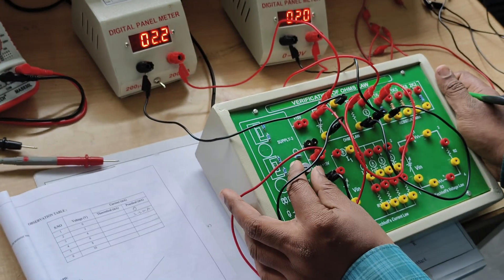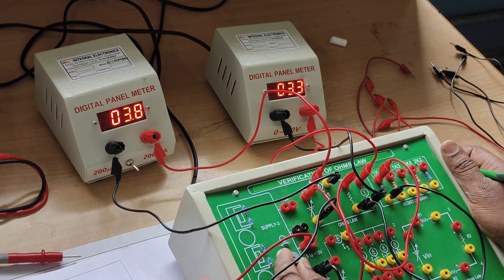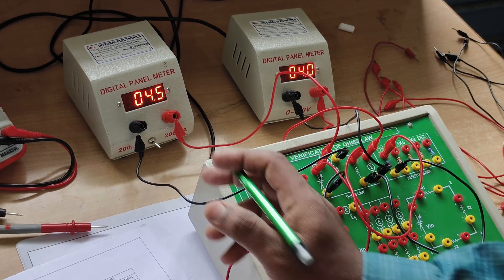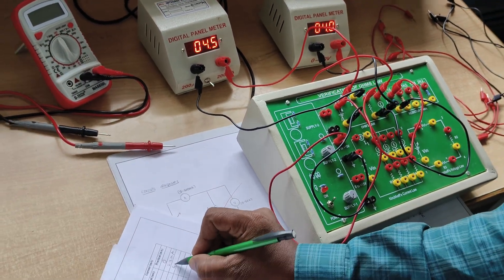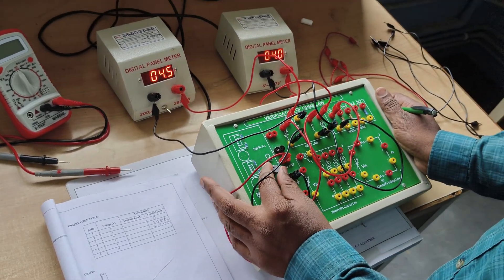Next, slowly apply 4 volts. At 4 volts, we are getting 4.5 milliamps.